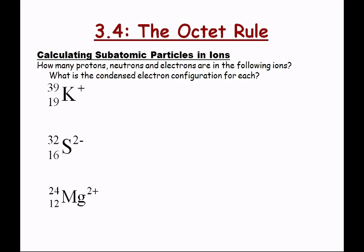How many protons, neutrons, and electrons are in magnesium-24, 2+? It has 12 protons — we know from the atomic number. It has 12 neutrons — we take the mass number 24 minus the atomic number 12. It has 10 electrons — because two of its electrons have gone away, giving it the neon noble gas configuration.